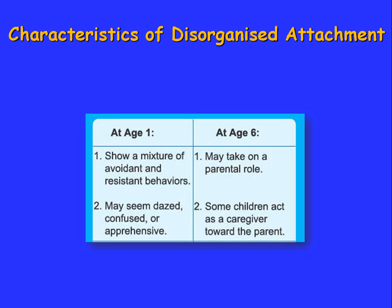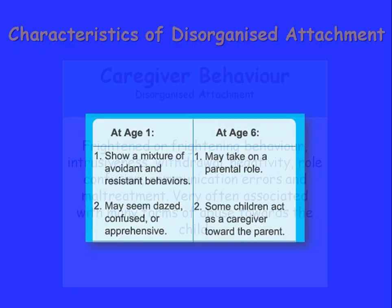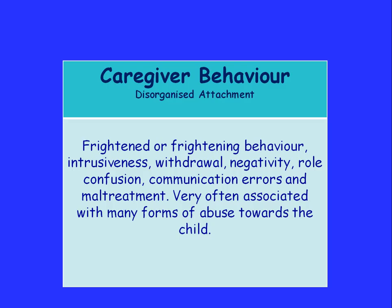And finally, disorganised attachment. This is usually generated by a very difficult or broken-down caregiving style. At age one, a child can show a mixture of avoidant and resistant behaviours — avoiding things, seeming dazed, confused or apprehensive. At age six, they may take on a parental role, with some children acting as a caregiver toward a parent. Let's look at the caregiver behaviour that generates disorganised attachment in the child.